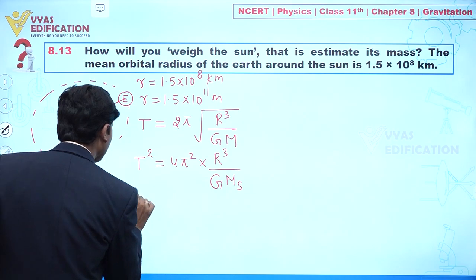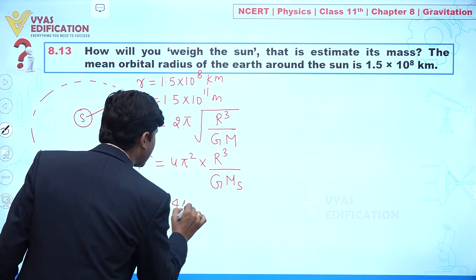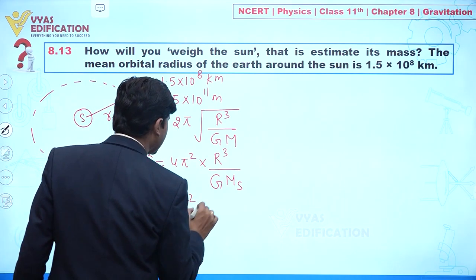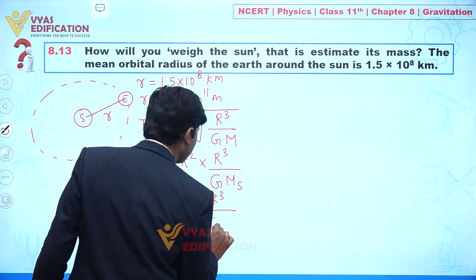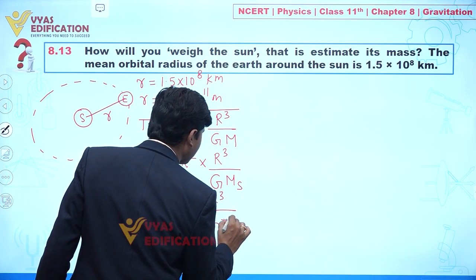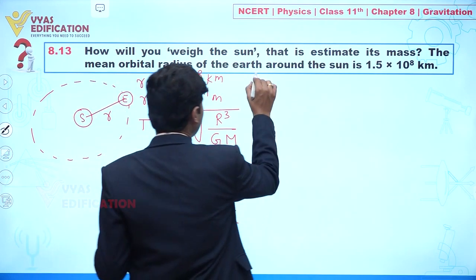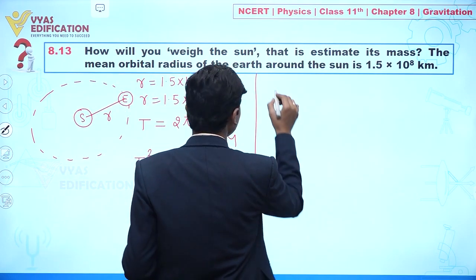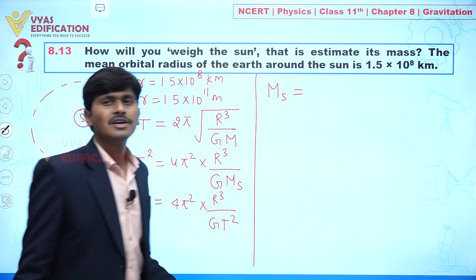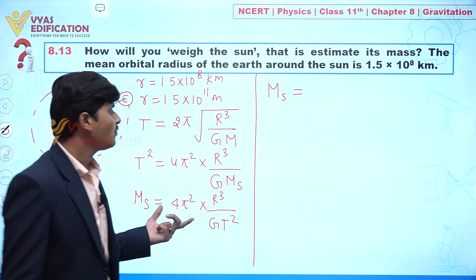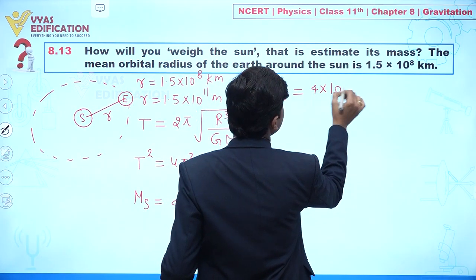From this, we can write the mass of the Sun as: M = 4π²r³ / (G × T²).